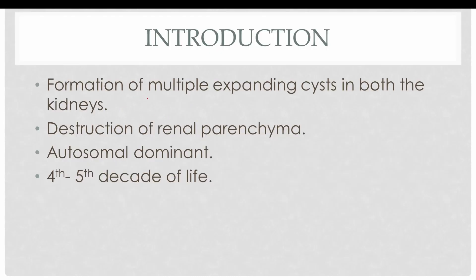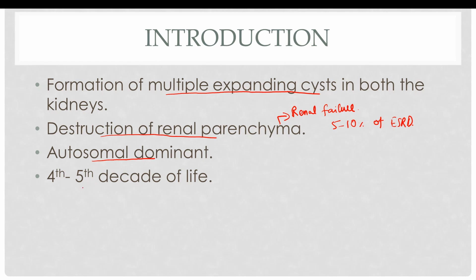Adult polycystic kidney disease is characterized by the formation of multiple expanding cysts in both the kidneys, which results in destruction of the renal parenchyma and ultimately renal failure. It constitutes almost 5 to 10 percent of the cases of end-stage renal diseases. The inheritance pattern is autosomal dominant with a slow onset, becoming significant in the fourth to fifth decade of life.